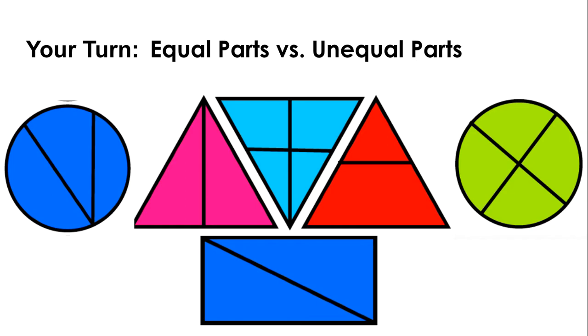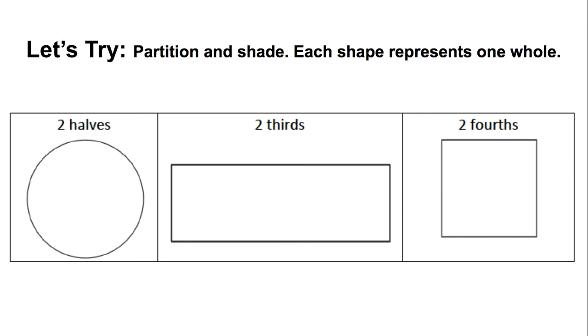Now into your packet. What we just learned is going to help you with that first question in the let's try. This is the second question in the let's try. They want you to partition and shade each of these shapes. It is important to know that each shape represents one whole: one whole circle, one whole rectangle and one whole square.